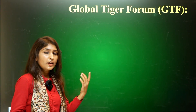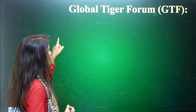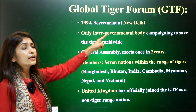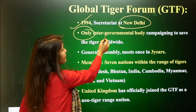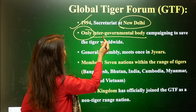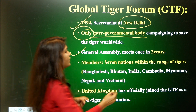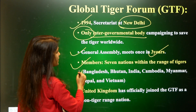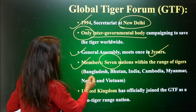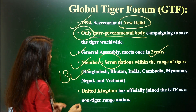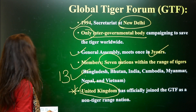The Global Tiger Forum was set up in 1994, with its secretariat in New Delhi. It is the only intergovernmental body campaigning for the conservation of tigers. Its general assembly meets every three years. The member nations are seven tiger range countries: Bangladesh, Bhutan, India, Cambodia, Myanmar, Nepal, and Vietnam. There is also one special country that is not a tiger range country — tigers are not found there today — that is also part of the Global Tiger Forum.